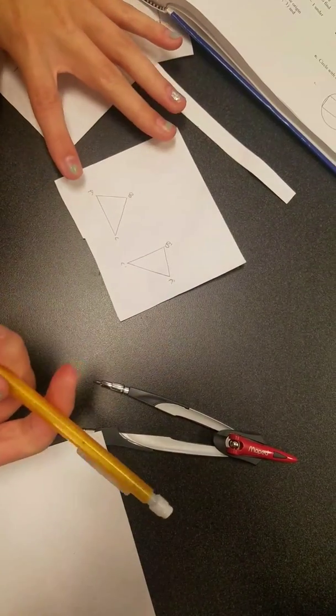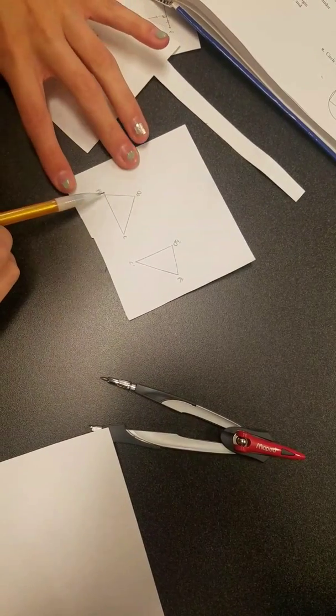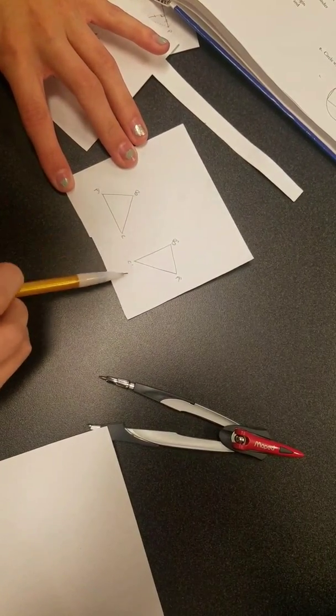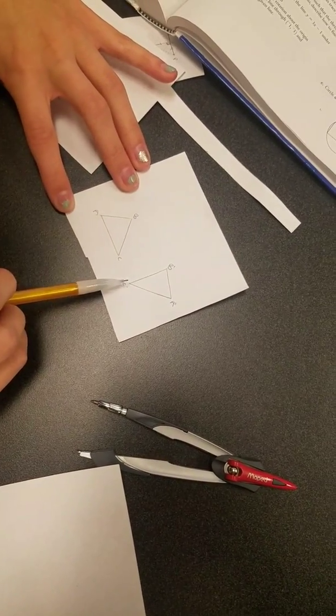And for this one we want to look at where our vertices are. So we see that ABC is over here and then A prime B prime C prime is over here.